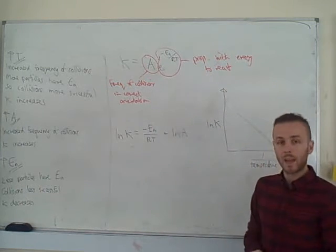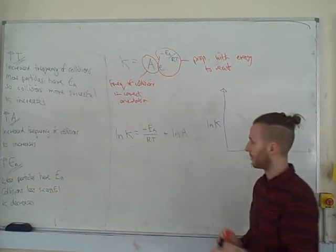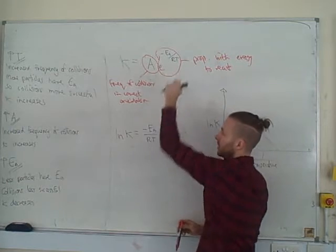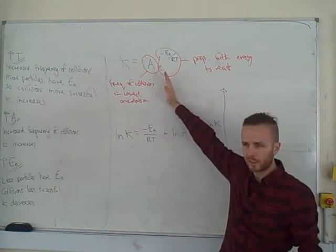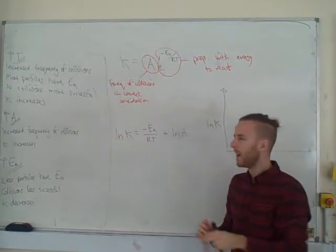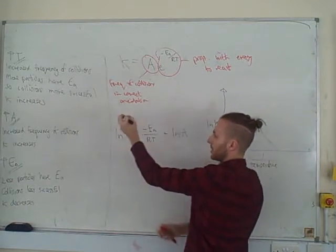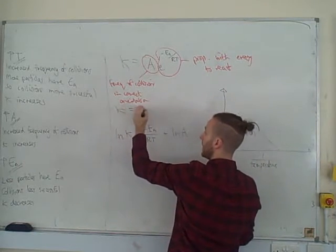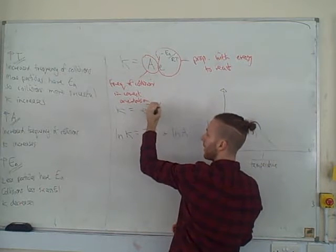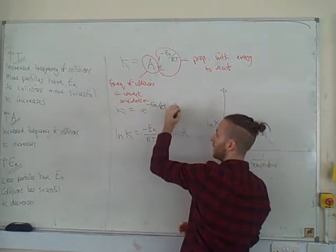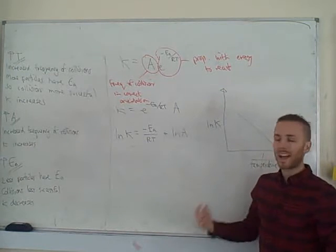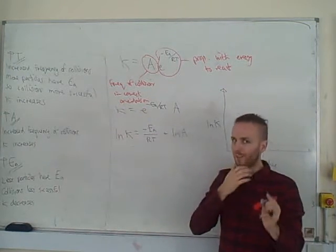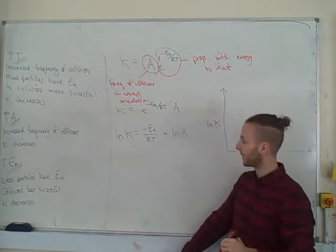What we can do is write this in a slightly different form. I'm just going to switch these two terms around. The reason I initially wrote it like this is because if you ever look in a textbook, this is how you see it. But I'm going to pop these the opposite way around. So k equals e to the minus Ea over RT times by A. We're then going to take the natural log of this equation. If you've not looked at logs, look at logs first.